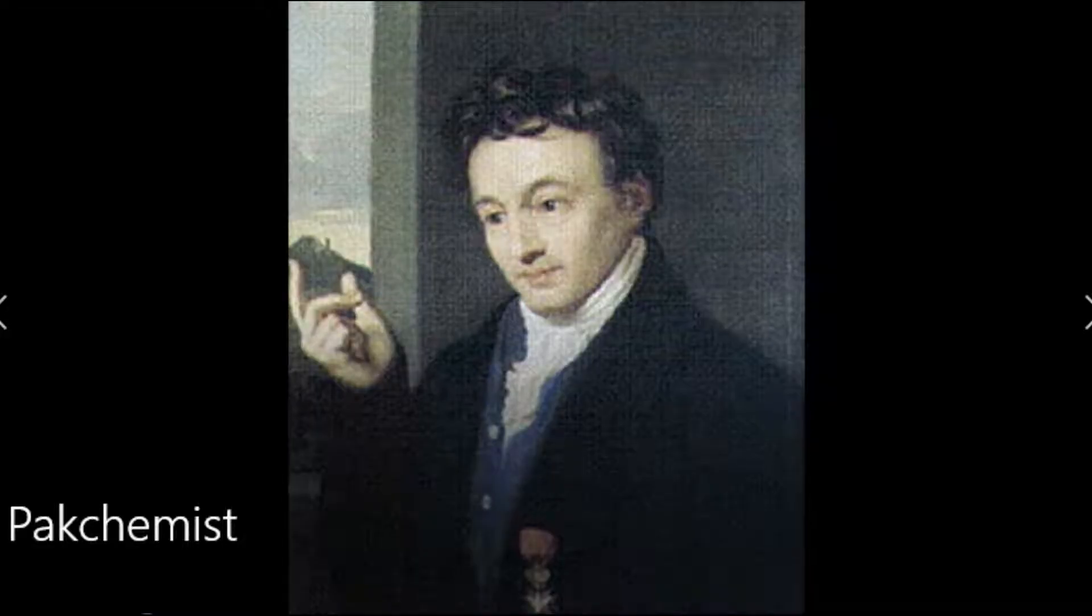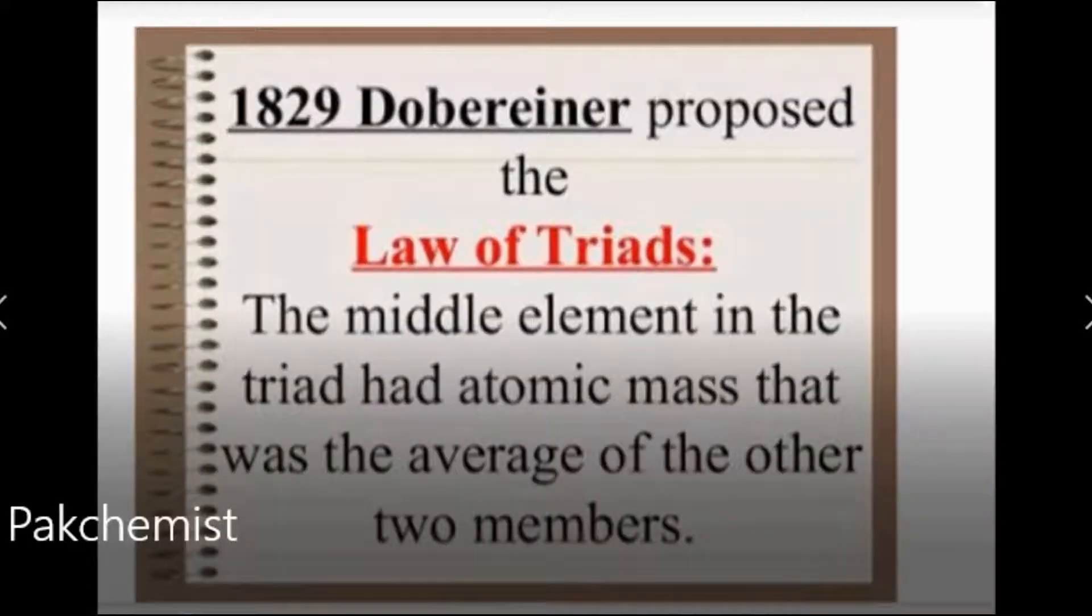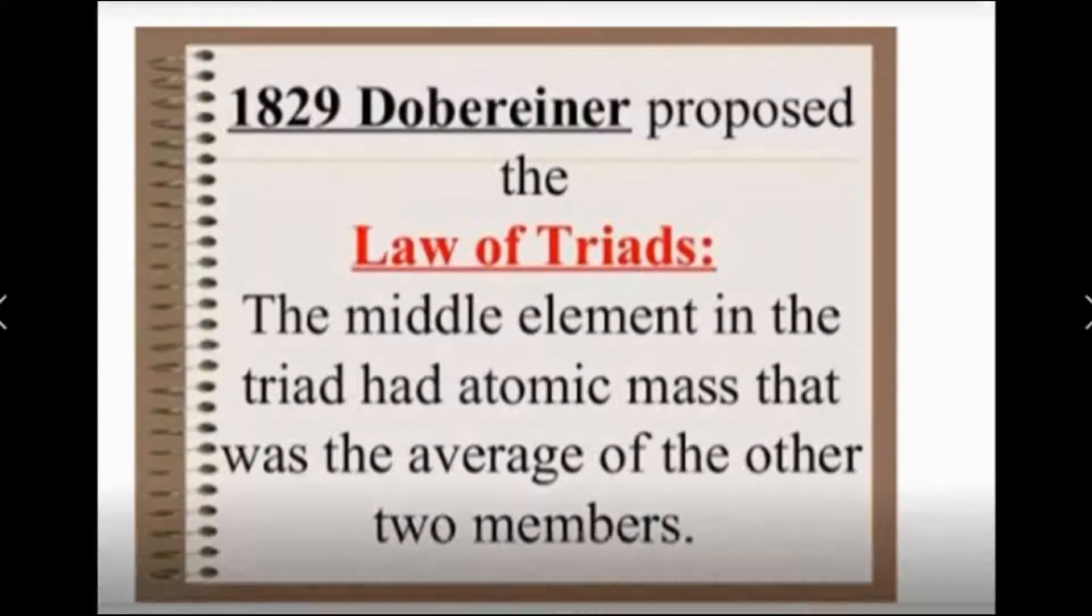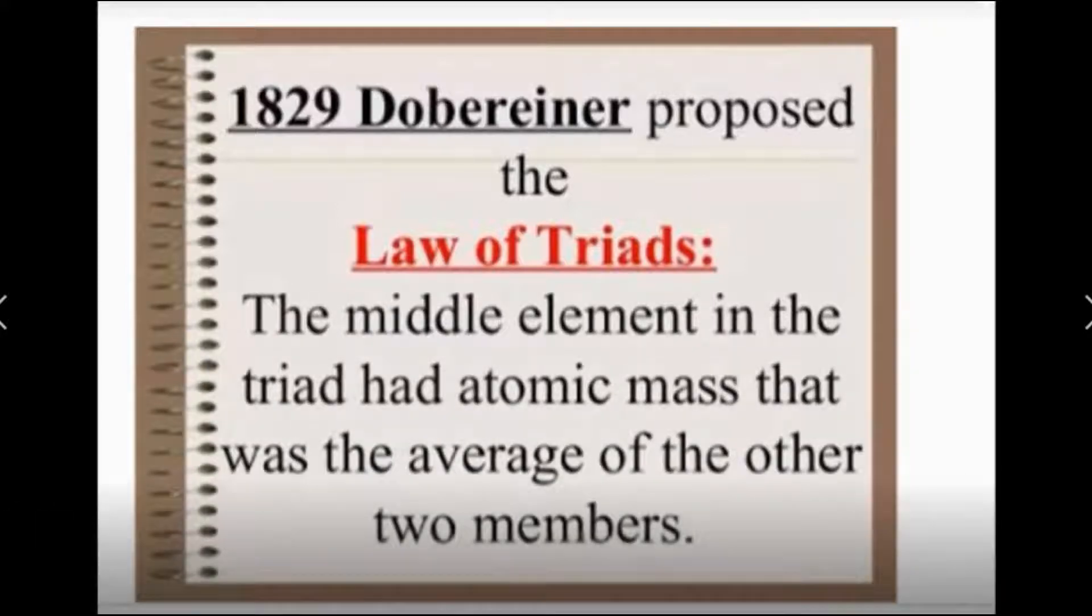Let's start with Mr. Dobereiner and see the history of modern periodic table. Mr. Dobereiner proposed a law which was named the law of triads. The law states that the middle element in the triads had atomic mass that was the average of the other two members.